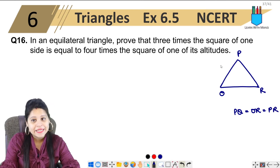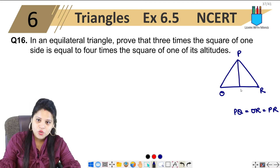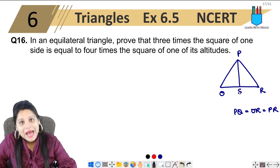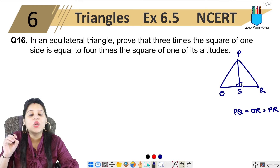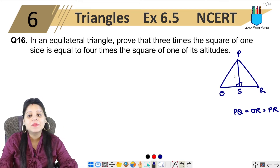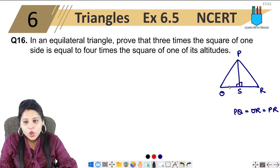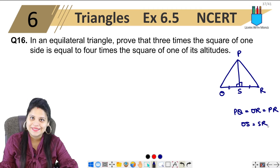Now we're talking about altitude. If I draw an altitude, let's call the foot of the altitude point S. In the equilateral triangle, the altitude meets the base at 90 degrees, and since the altitude bisects the base into two equal parts, QS equals SR.